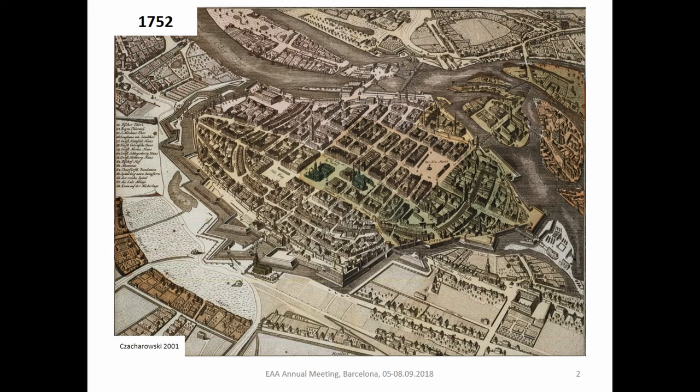When we look at old plans of European cities — this is the example of Wrocław, but I expect the situation could be similar in other European cities — we see the city itself in the center, often surrounded by fortifications, and around it there's a semi-rural area, the hinterland, the suburb, which has a completely different character. We can see field plots, gardens, and orchards. These things are also mentioned in written sources.